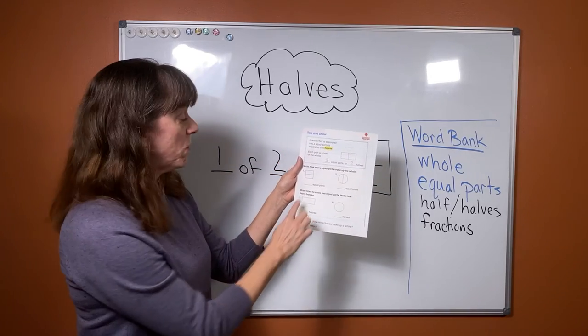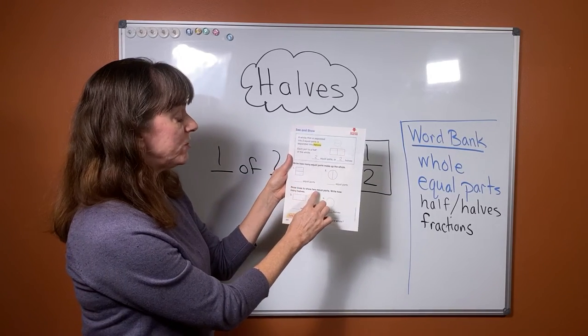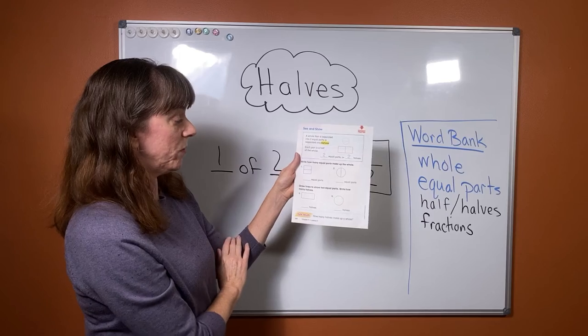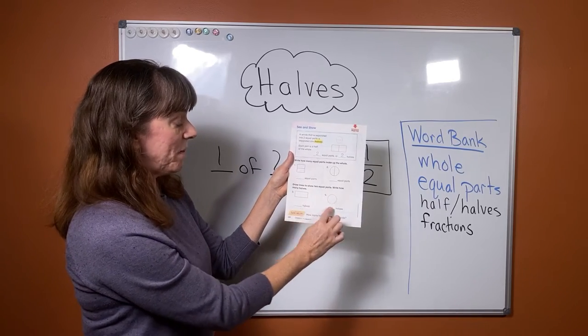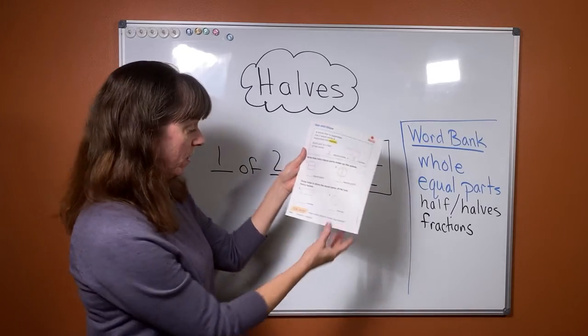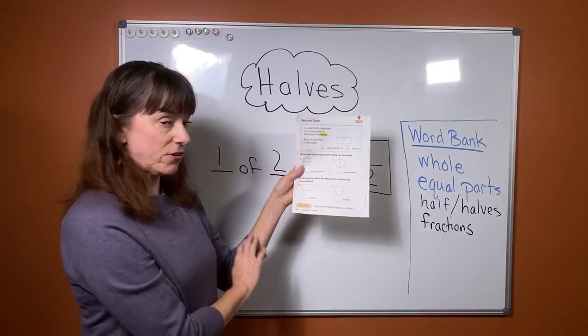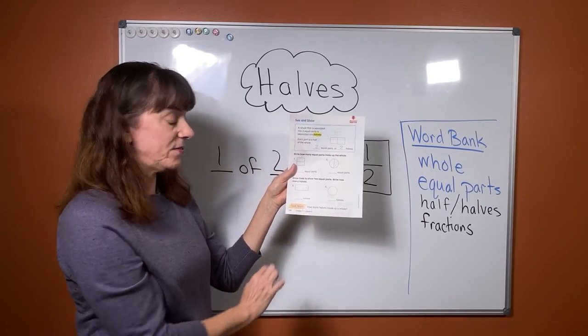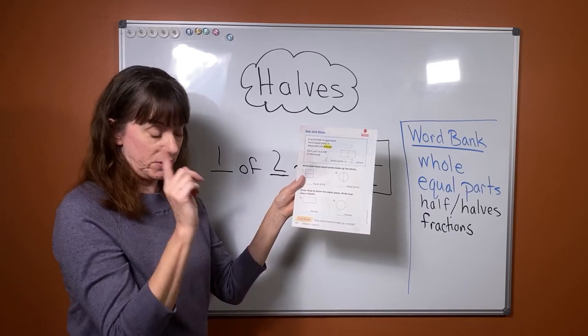For three and four it tells you to draw lines to show two equal parts, then write how many halves you have. So you're going to draw the lines. Make sure you get equal parts. Talk to your grown-up. How many halves make up a whole? You can figure that out.